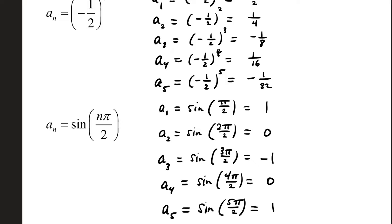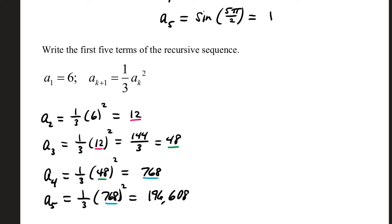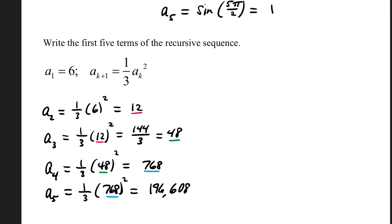There are also sequences that are defined recursively. This is just one example of that. You have a first term given. a sub 1 is equal to 6. The next terms will all be built based on the previous result. k plus 1, that's the next term of the sequence. That's defined as 1 third times the previous value. You notice that the index is 1 less, squared. So a sub 1 is 6. a sub 2 will be 1 third times that previous value, squared. 1 third times 36 is 12.